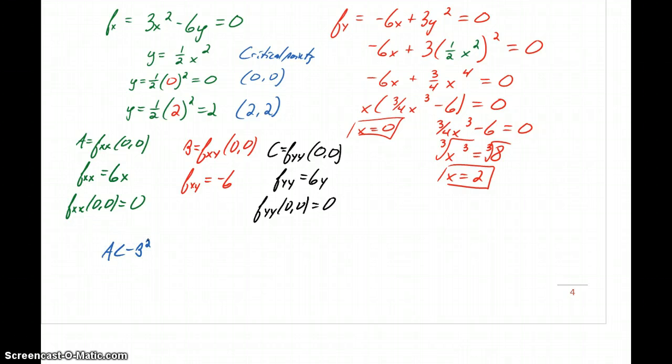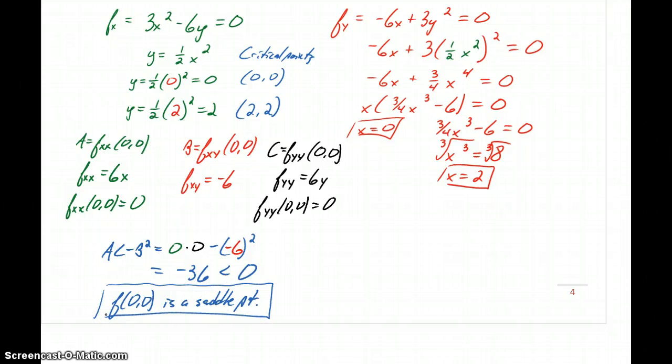So we look at ac minus b squared, which in this case will be equal to 0 times 0 minus negative 6 squared, which in this case will be minus 36. Since that result is less than 0, that tells us that f of 0, 0 is a saddle point. So that gives us one of our results to consider. We know that 0, 0 is a saddle point.